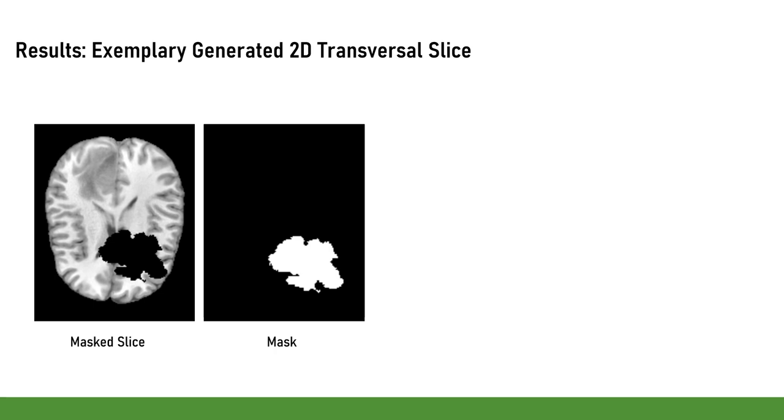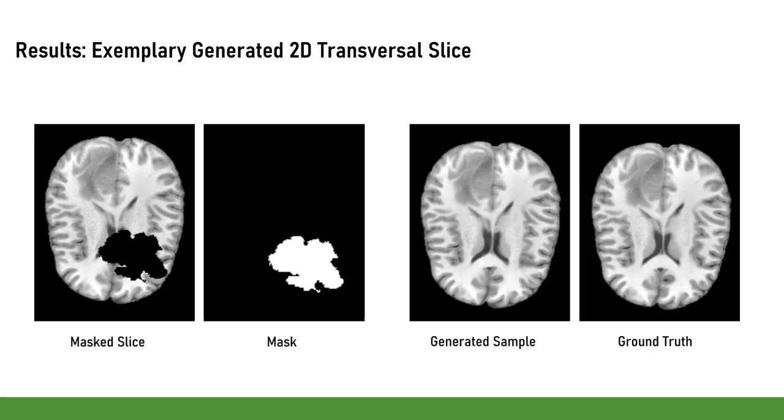We can now have a look at some exemplary images created in our cross-validation. We have this masked slice and the mask as input, and we obtain a generated sample which is of good quality and shows high similarity to the corresponding ground truth.